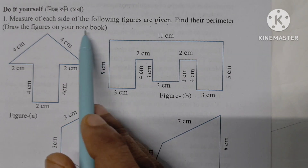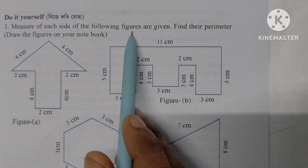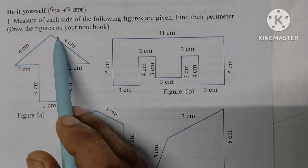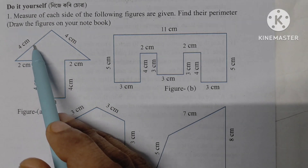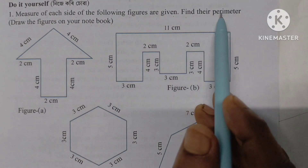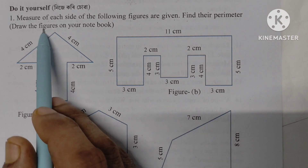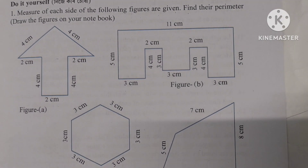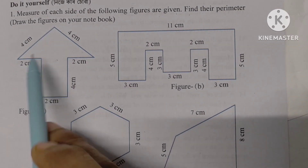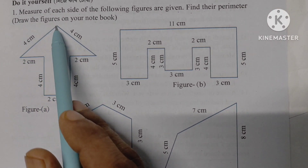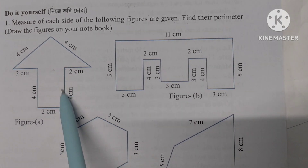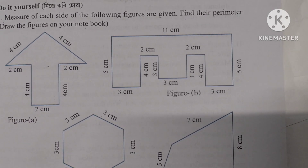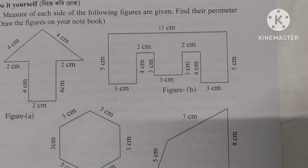Measure of each side of the following figures is given. The perimeter is the sum of all sides. A side is equal to ET2 plus ET2 plus ET2 plus ET2 plus ET2 — that is, we add all the sides together to find the perimeter.